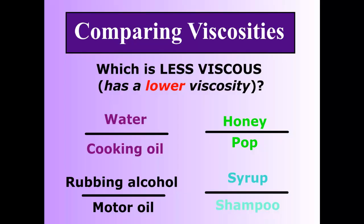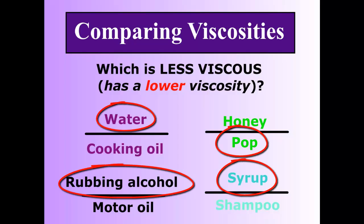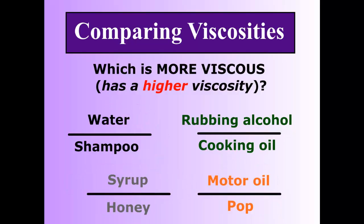Okay. This should be what you picked — those four would have a lower viscosity: water, pop, rubbing alcohol, and syrup would have the lower of the two viscosities.